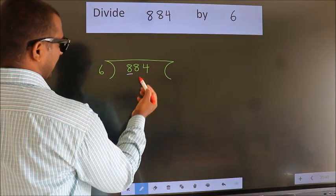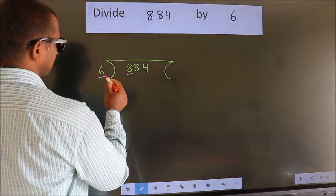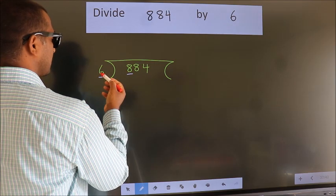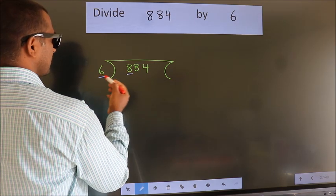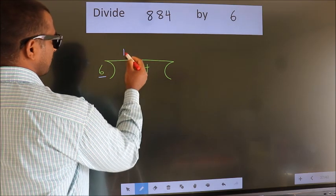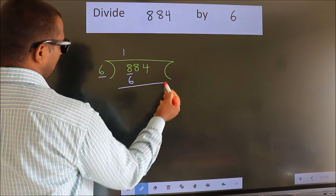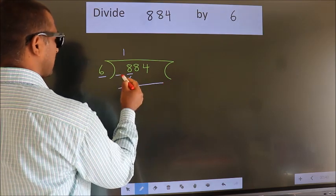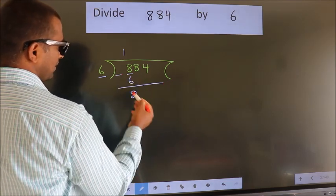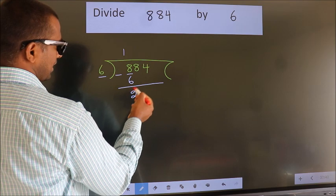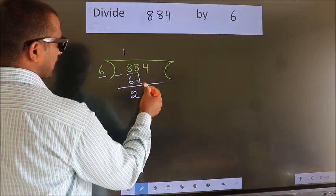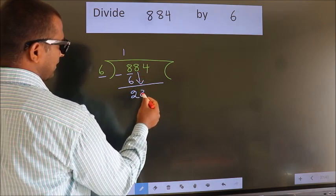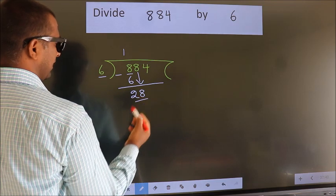Here we have 8, and here 6. A number close to 8 in the 6 times table is 6 ones, which is 6. Now we should subtract — we get 2. After this, bring down the beside number. So, 8 comes down, giving us 28.